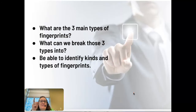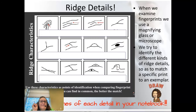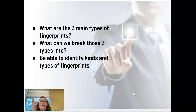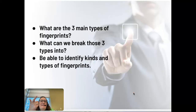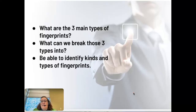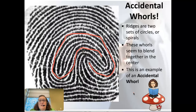To summarize: the three main types of fingerprints are arches, loops, and whorls. Loops break down into left loops, right loops, central pocket loops, and double loops. Whorls break down into standard whorls and accidental whorls. Arches break down into plain arches and tented arches. You should be able to identify all of those — make sure they're written into your notebook.